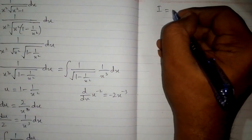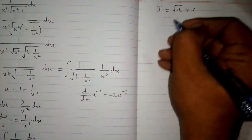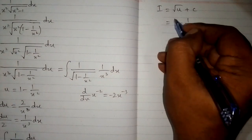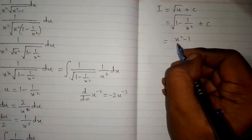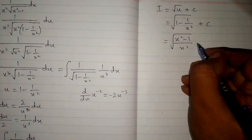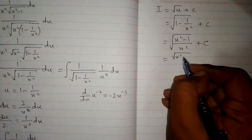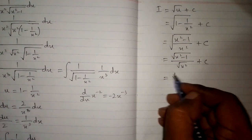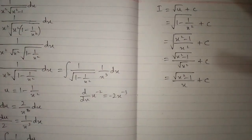The integral is square root of u plus c. Substituting back u equal to 1 minus 1 upon x square, this becomes square root of 1 minus 1 upon x square plus c, which equals square root of x square minus 1 upon x square plus c. Separating the square root, we get square root of x square minus 1 upon x plus c, which is the final answer.